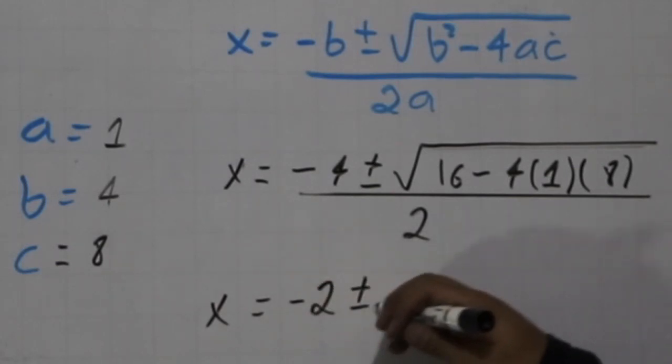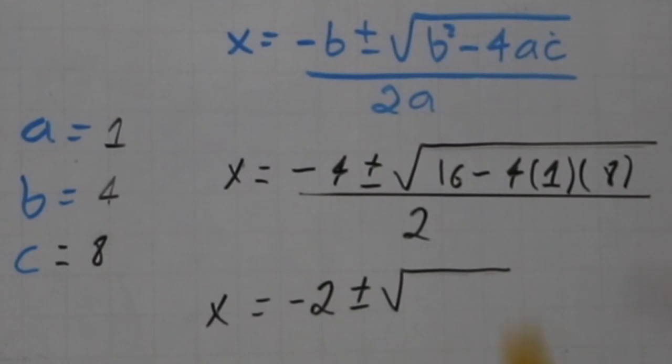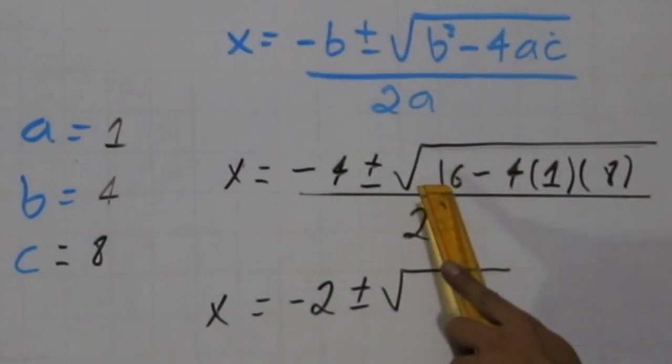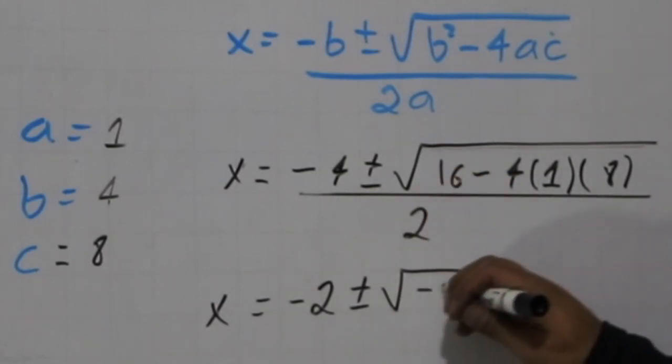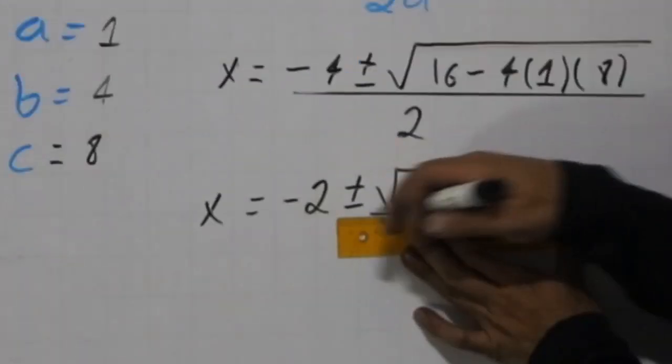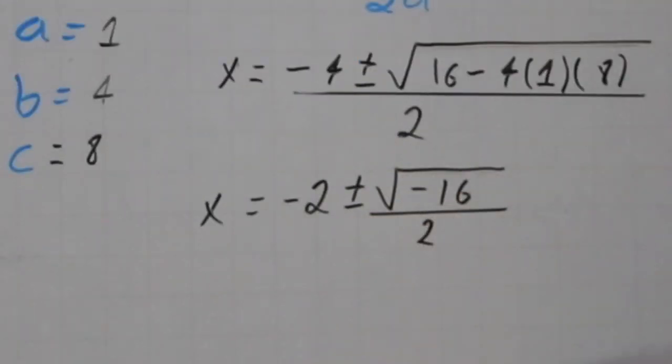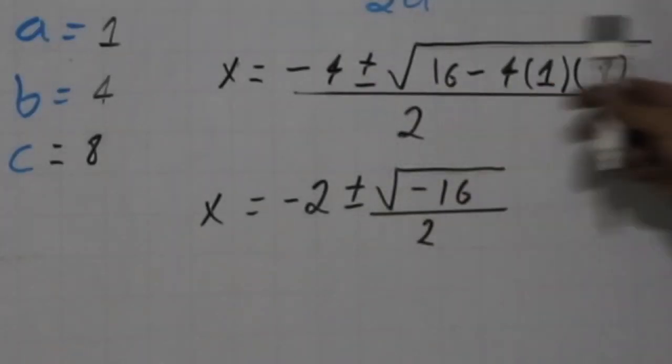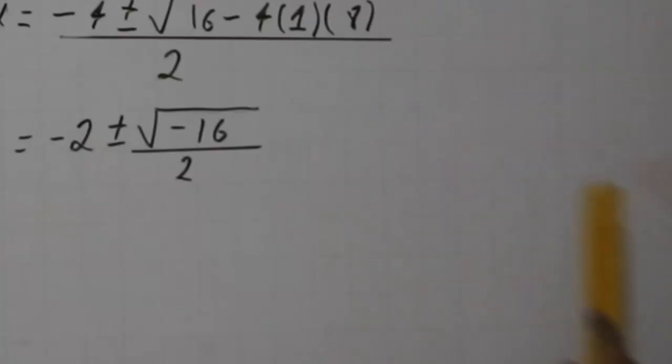And we have here -4 times 8, that's 32, and 16 - 32 is -16. And remember, we are dividing this by 2. We already divided the number 4, but this part we haven't divided, so let's be really careful.